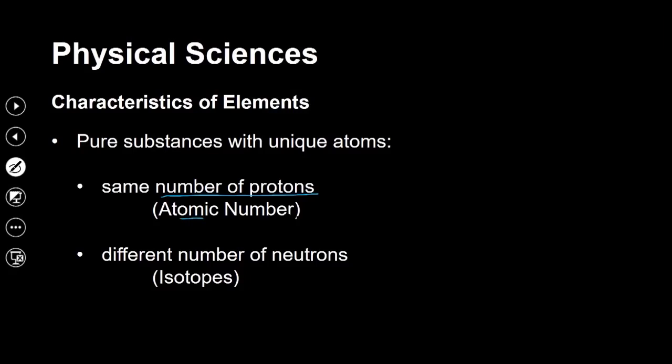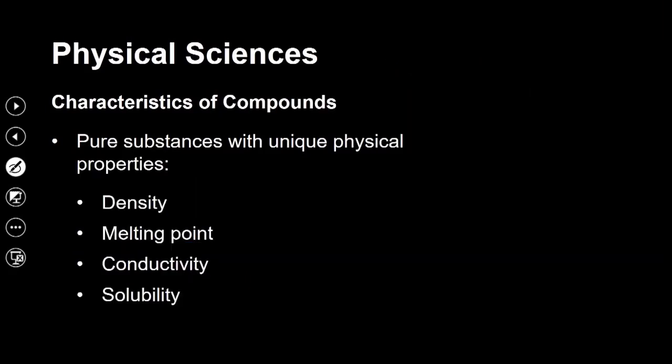Pure substances have atoms with the same number of protons. The number of protons in an atom is the atomic number — also called the proton number. An element may have different numbers of neutrons. For example, element X with atomic number A and mass number B can exist with the same atomic number but a different mass number — meaning a different number of neutrons. These are atoms of the same element with the same atomic number but different atomic masses, and we call these isotopes.